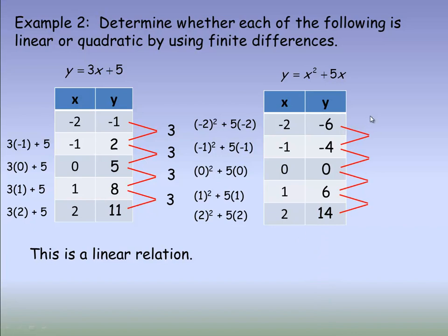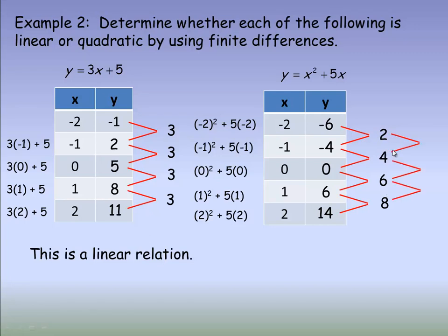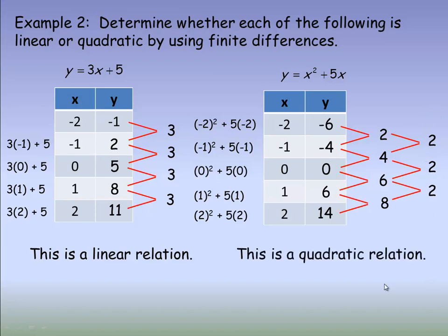We calculate the first differences again. From negative 6 to negative 4 is an increase of 2; from negative 4 to 0 is 4; 0 to 6 is 6; 6 to 14 is 8. The first differences — 2, 4, 6, 8 — are not all the same, so this is not linear. Now we calculate the second differences: from 2 to 4 is 2; from 4 to 6 is 2; from 6 to 8 is 2. The second differences are all the same, so this is a quadratic relation.